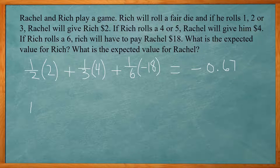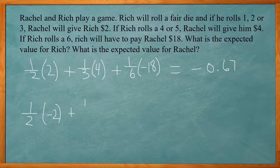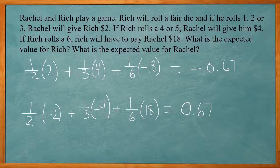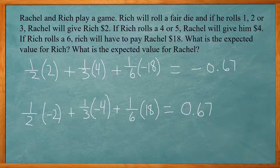Now for Rachel: if Rich rolls a 1, 2, or 3, it's a 1 out of 2 chance, and she will lose $2, so it's negative 2. Rolling a 4 or 5 is a 1 third chance, and she's going to lose $4. Rolling a 6 is a 1 out of 6 chance, and she's going to gain $18. When we multiply this out, we get the same value but positive. So overall, Rachel has the advantage. If we play this game over and over again, it's expected that Rachel will win out — she will, over the long term, gain $0.67, while Rich will lose $0.67.